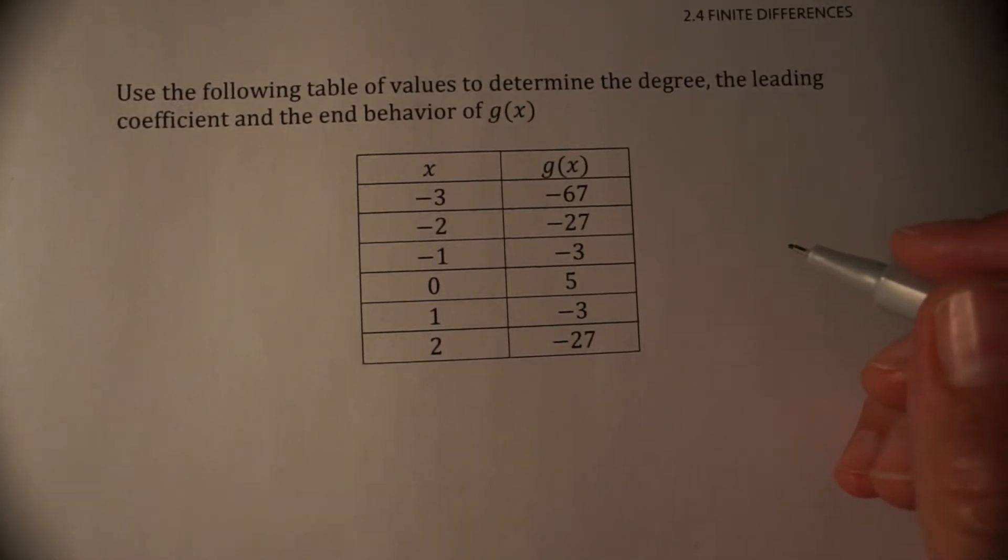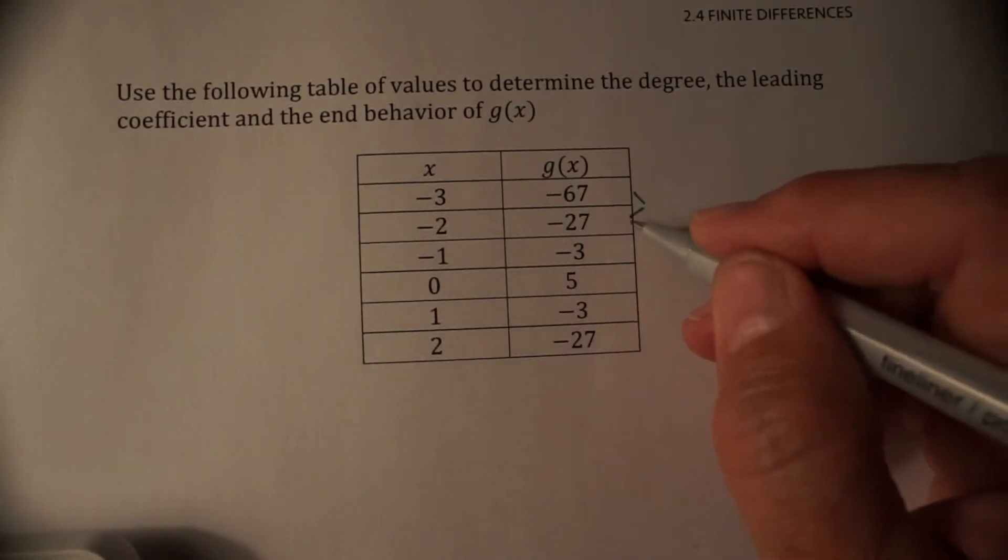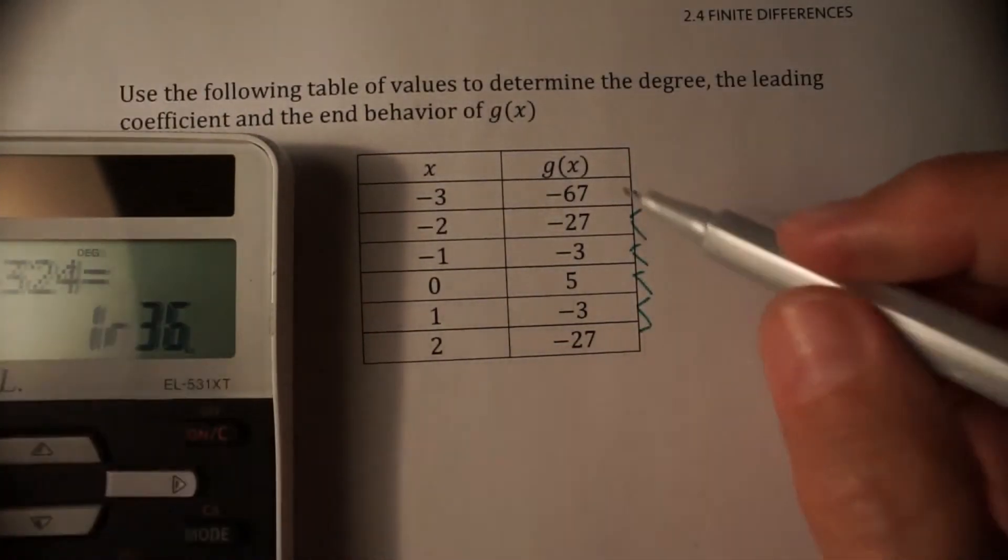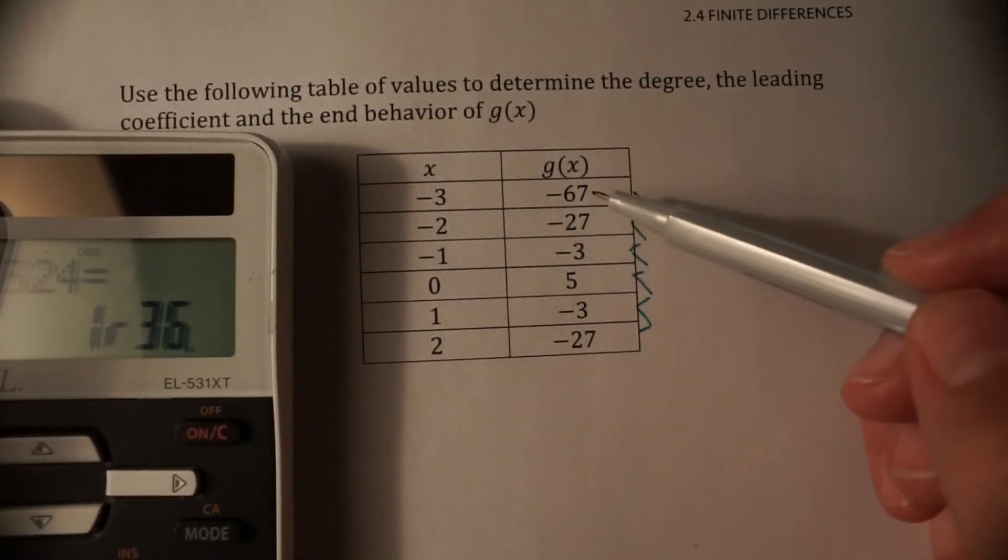So it says use this table of values to determine the degree, the leading coefficient, and the end behavior. We'll start with the degree. First we'll just go ahead and find our finite differences. Remember, always taking the second one and subtracting the first one. These are going up in order, so that's all right.